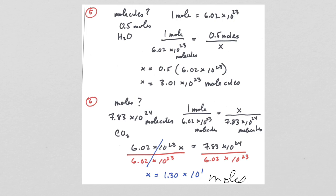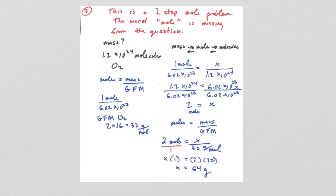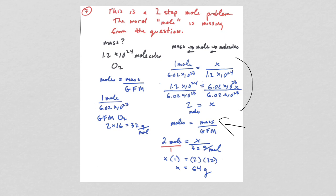Question 7 is a two-step mole problem because the word 'mole' is missing from the problem. Since you're given molecules and looking for mass, you go from molecules to moles first using the proportion, which gives 2 moles. Then use moles = mass ÷ gram formula mass to get the final answer of 64 grams.